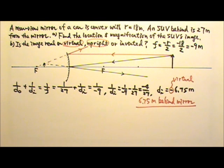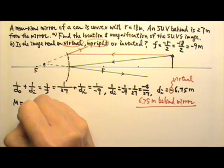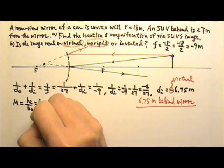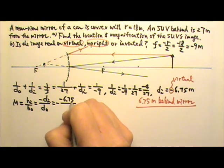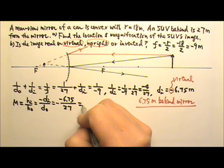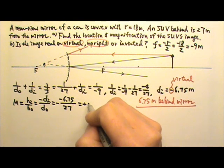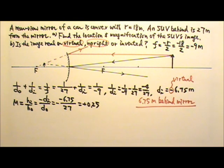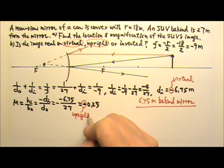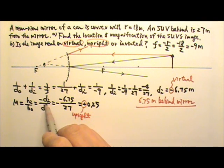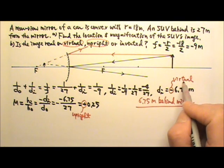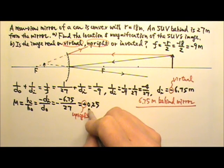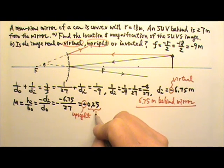Now let's find the magnification. The magnification equation is HI/HO, which also equals negative DI over DO. That's negative (-6.75) over 27. The two negatives cancel, giving us positive 0.25. A positive magnification means the image is upright. This 0.25 means the image is one-fourth the size of the object.